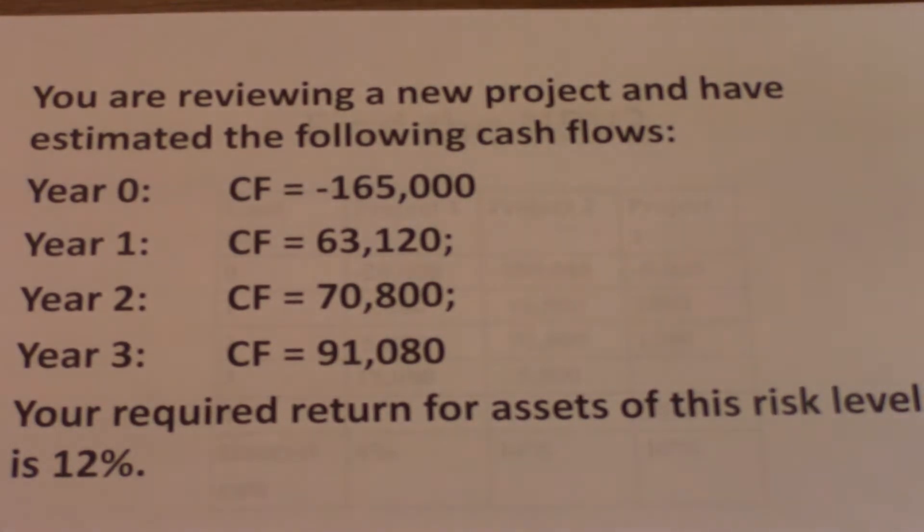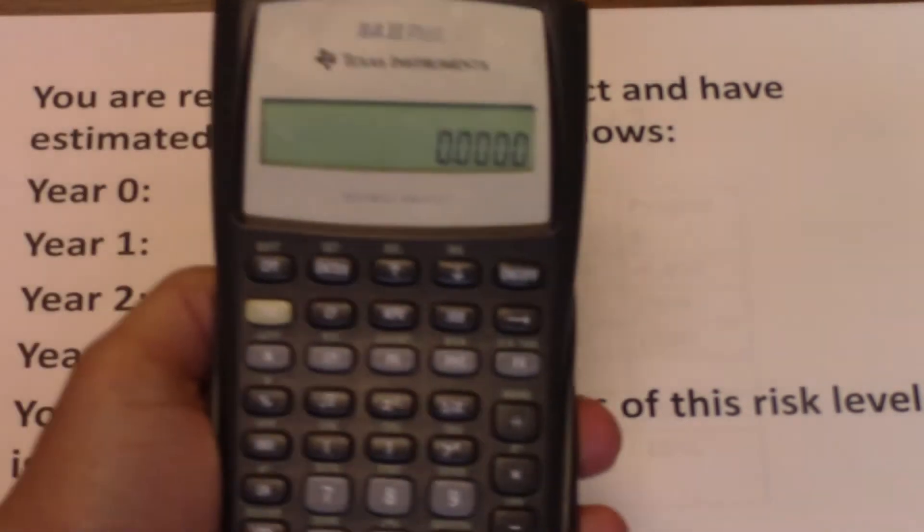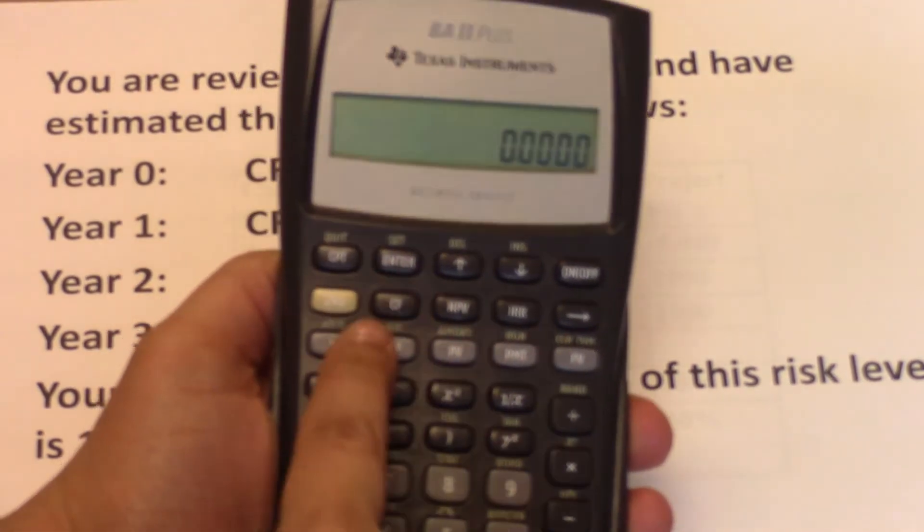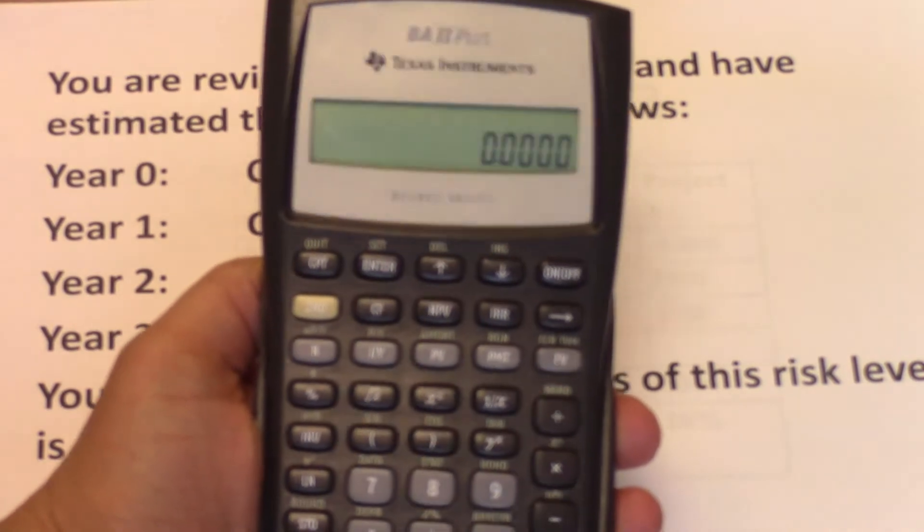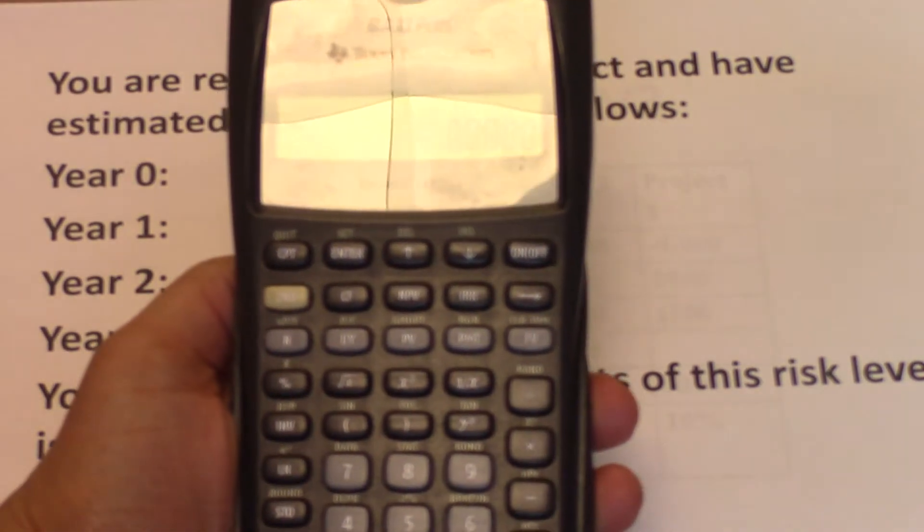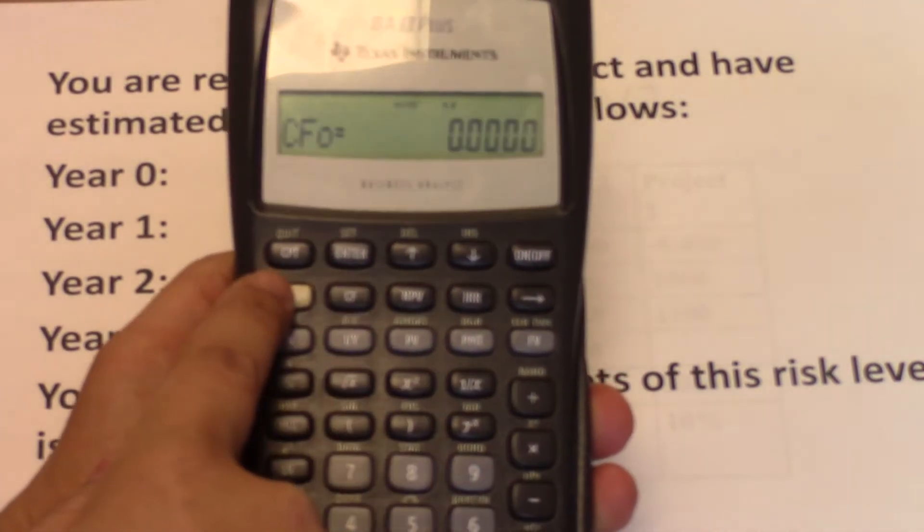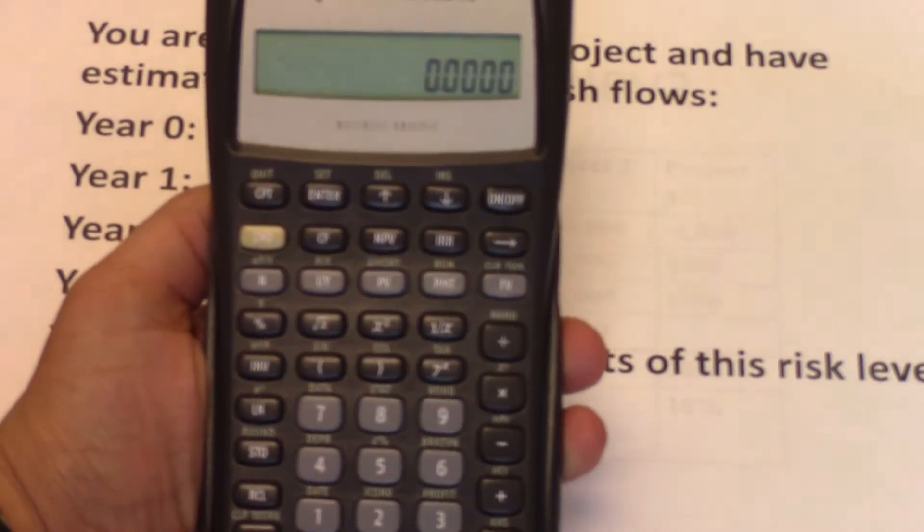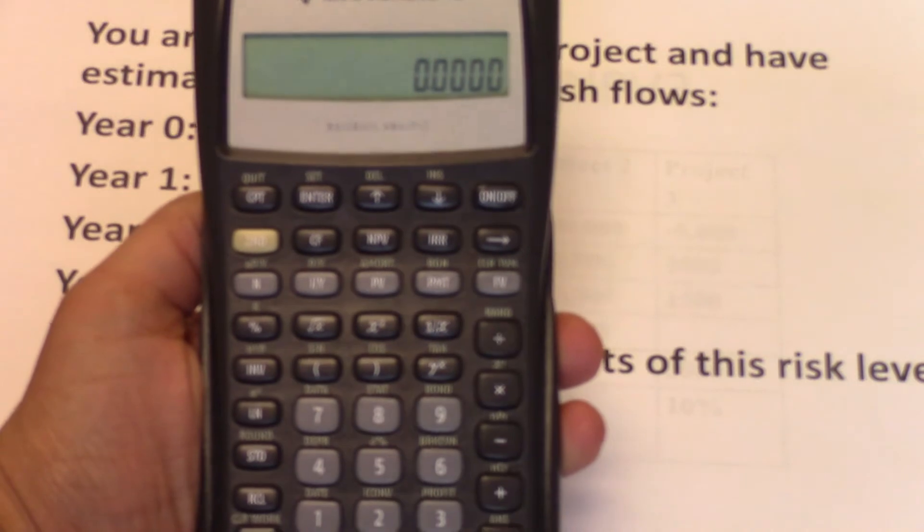So to get the NPV here, we're going to use the financial calculator. The first thing you need to do is clear all of your cash flow inputs from before. We're going to be using the CF button and the NPV button. To clear all of your cash flows, you do CF, second, CE/C. And therefore, all of your cash flows are cleared.